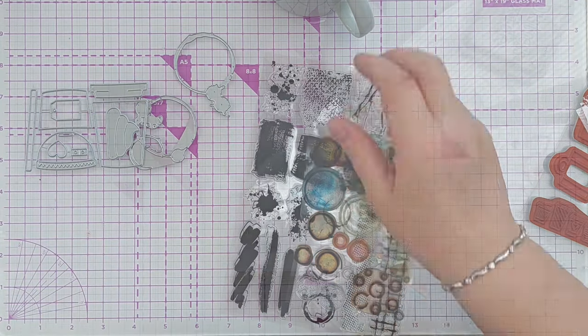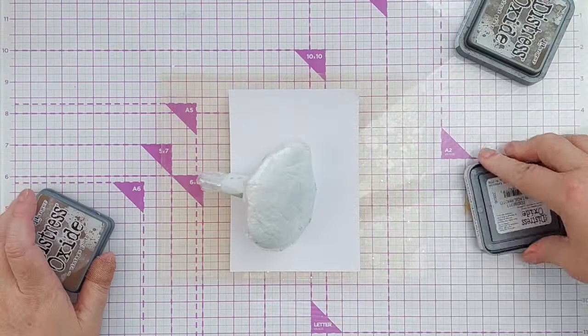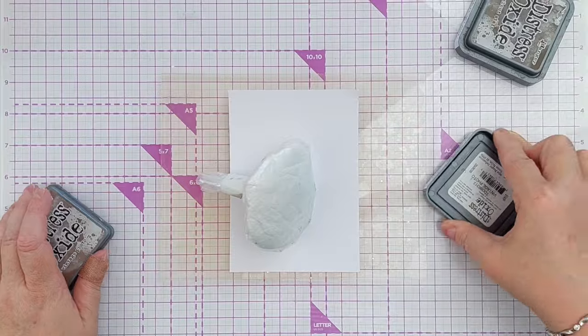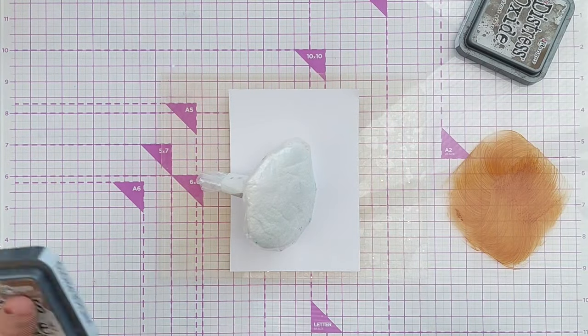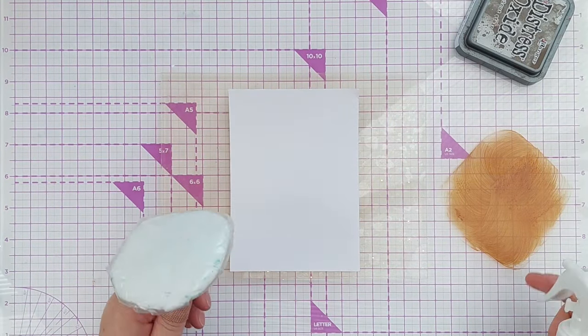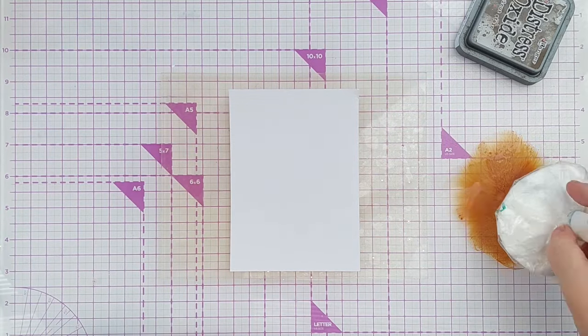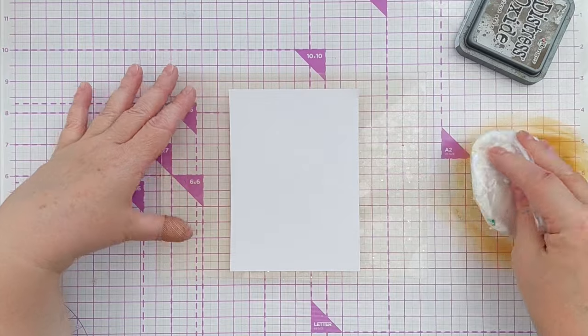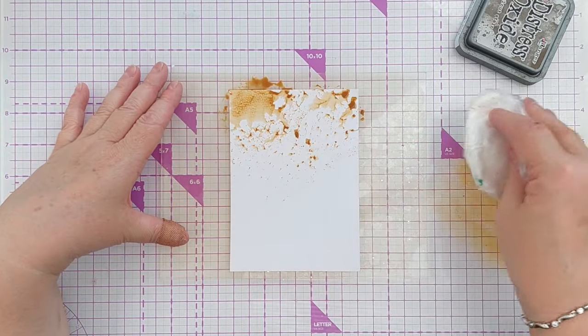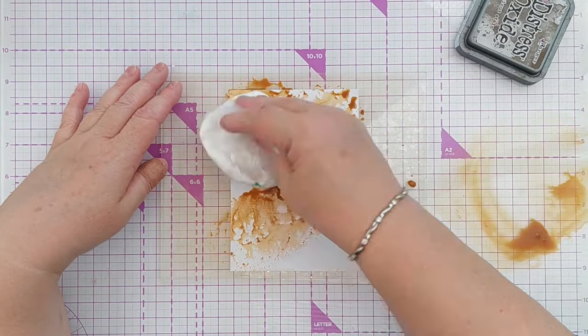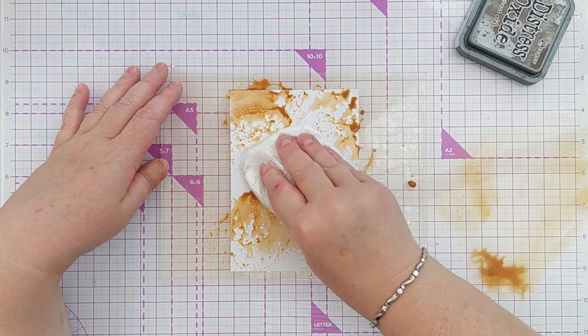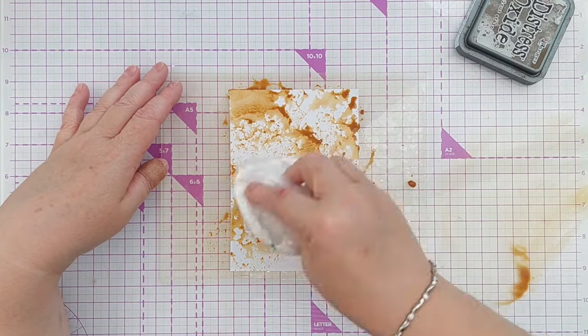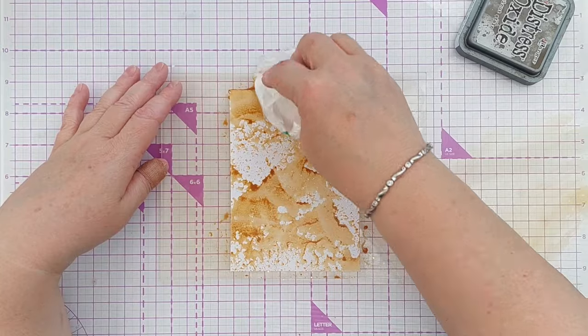Right, I'm switching to voiceover now. To start the process I decided to do some smushing on a piece of mixed media paper. So I've got some vintage photo distress oxide, I've smushed it onto my glass mat, squirted it with water and then picked it up with my smusher and smushed it down onto this mixed media paper which is being held in place by a grip mat.